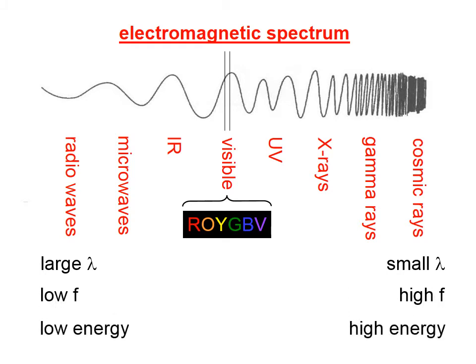It turns out that for light, the amount of energy carried by the light is proportional to the frequency. So on the left, low frequency means low energy, and on the right, high frequency means high energy. You can think of this picture as a rope attached to a wall, and you're at the other end shaking it up and down. It would take a lot more energy to make the rope look like the high-frequency pattern on the right compared to the low-frequency pattern on the left.